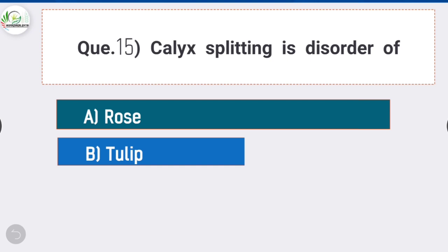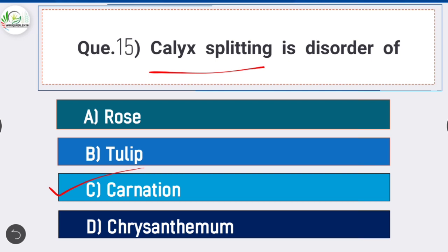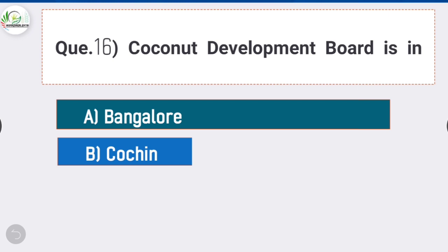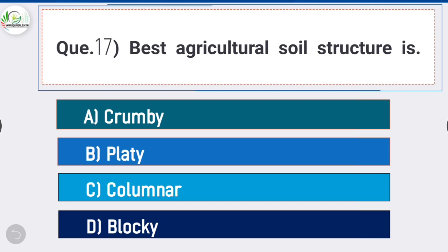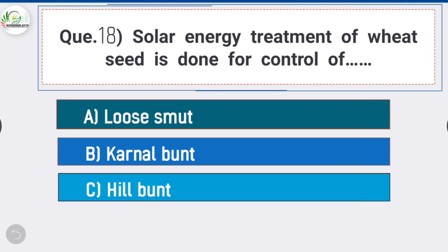Question number fifteen: calyx splitting is a disorder of - answer is option C - carnation. Question number sixteen: Coconut Development Board is located in - answer is option B - Kochi. Coconut Development Board is located in Kochi. Question number seventeen: best agricultural soil structure is - answer is option A - crumby.